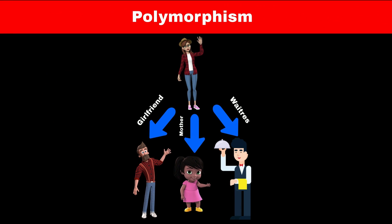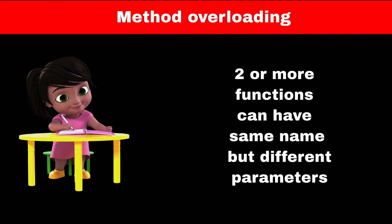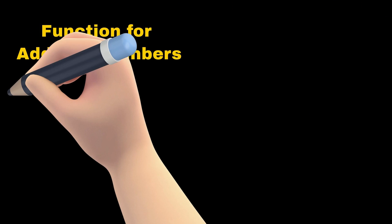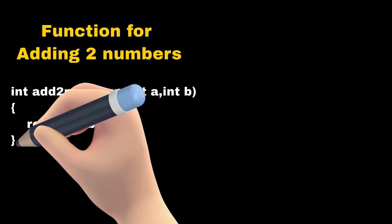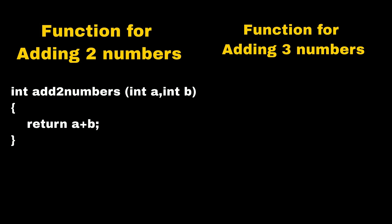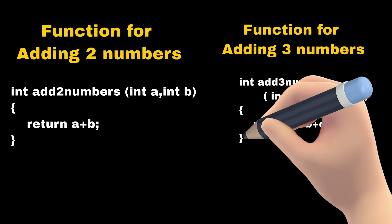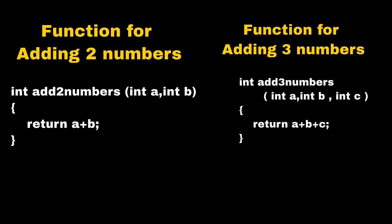Method overloading is a way to implement polymorphism. Method overloading or function overloading is a feature that allows a class to have multiple functions with the same name but with different parameters. Consider we want to add two numbers - we will create a function named 'add two numbers' which will take two parameters and return their sum. Now if we want to add three numbers, we can create a function named 'add three numbers' which will take 3 parameters and return their sum.